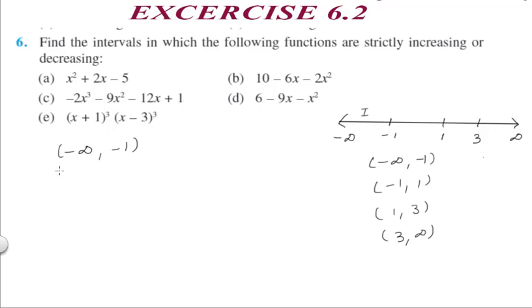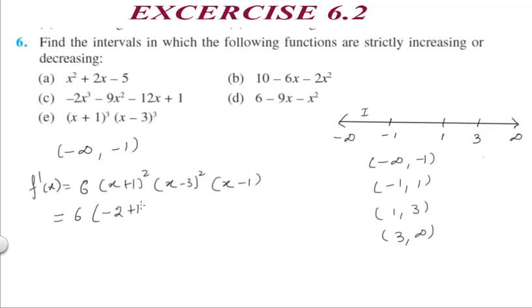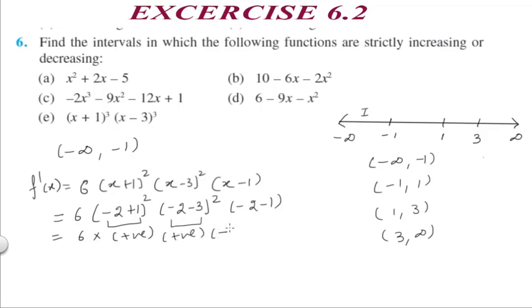For the interval minus infinity to -1, we take x = -2. Substituting into f'(x) = 6(x+1)²(x-3)²(x-1): (x+1)² gives positive, (x-3)² gives positive, and (x-1) gives negative. The total answer is negative, less than 0. Hence the function is strictly decreasing in this interval. You can similarly check the remaining intervals: -1 to 1, 1 to 3, and 3 to infinity.